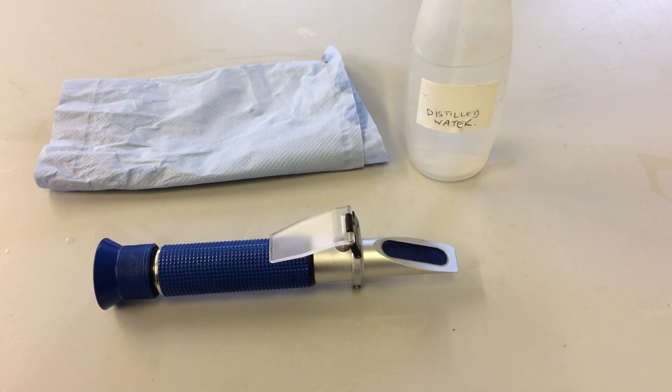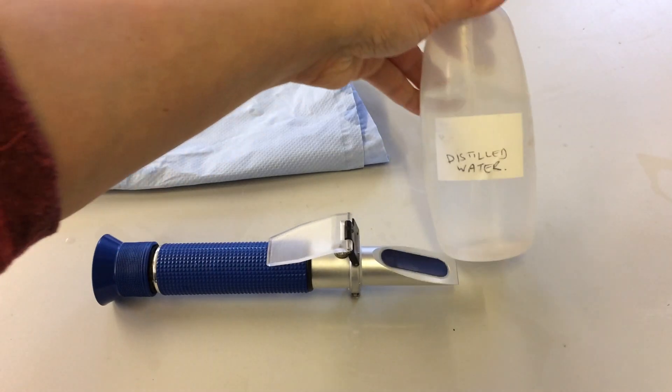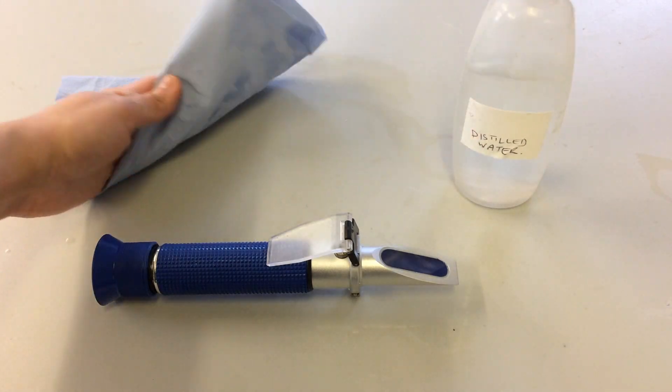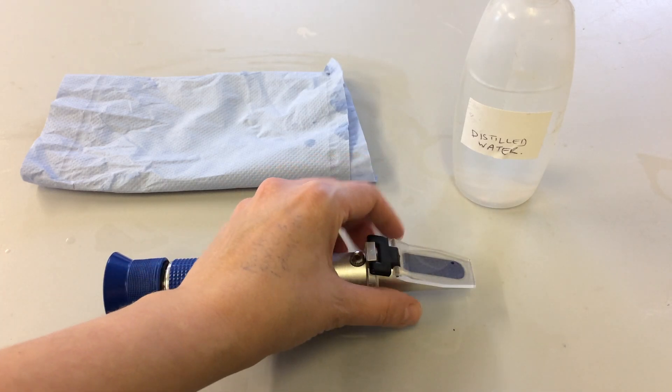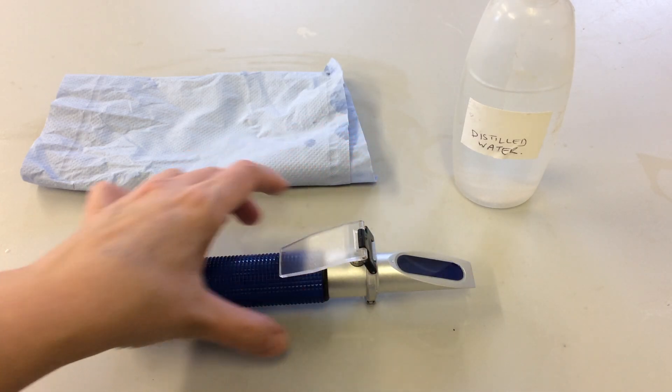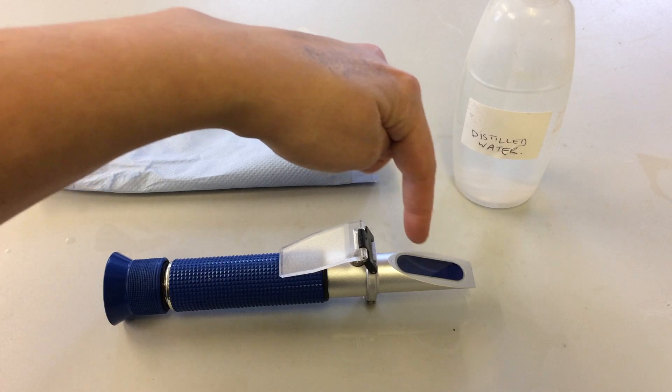So using the V2 refractometer, I'm going to show you how to calibrate your refractometer before you measure your seawater sample's salinity levels. First, you need distilled water, a bit of lab tissue, and obviously your refractometer. We're going to lift this cover plate and place our sample onto this section here.